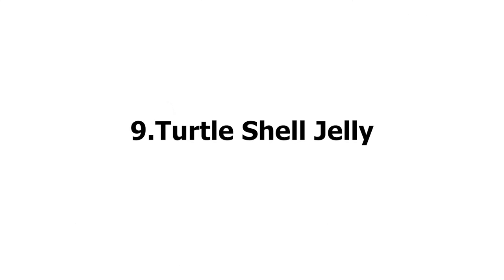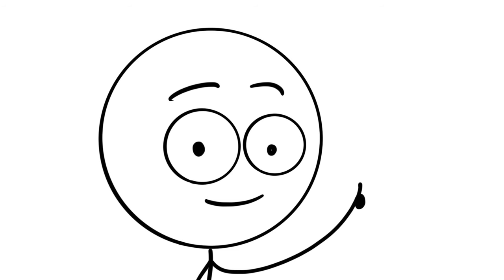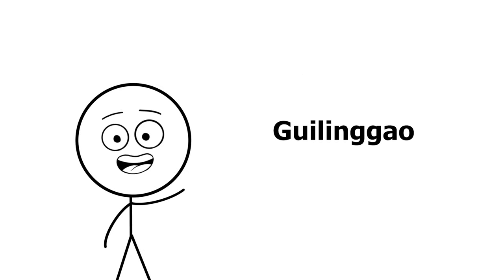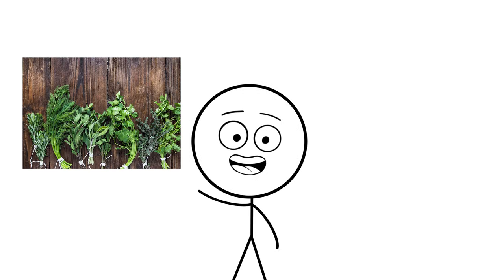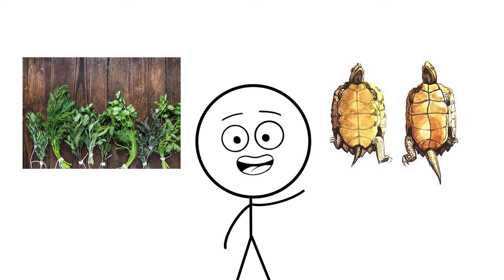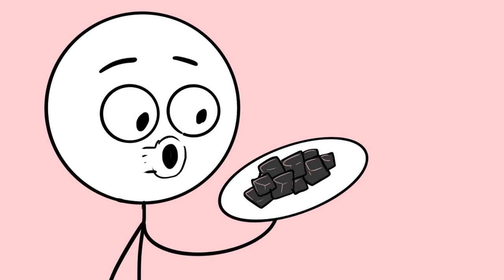Number nine, turtle shell jelly. That's a good one. Every part of every living thing is on the menu in China, and that includes a shell of turtles. This Chinese dessert is also known as guiling gao. I hope I didn't butcher that. And it's made from a mixture of herbs and a turtle's bottom shell. This unique, yet amazing, dish is also used for medicinal purposes.